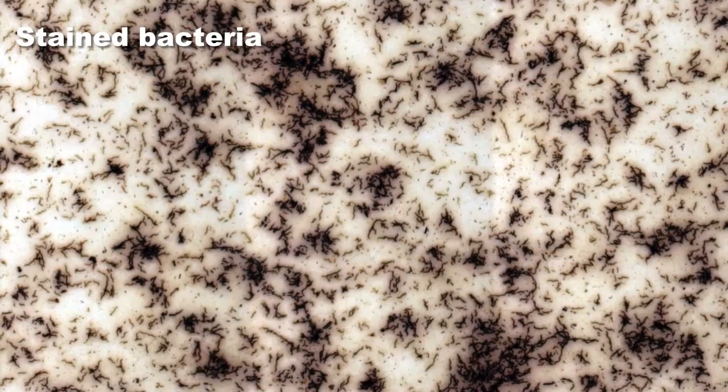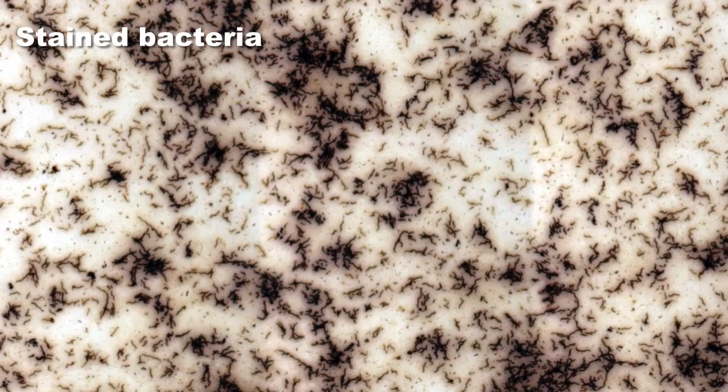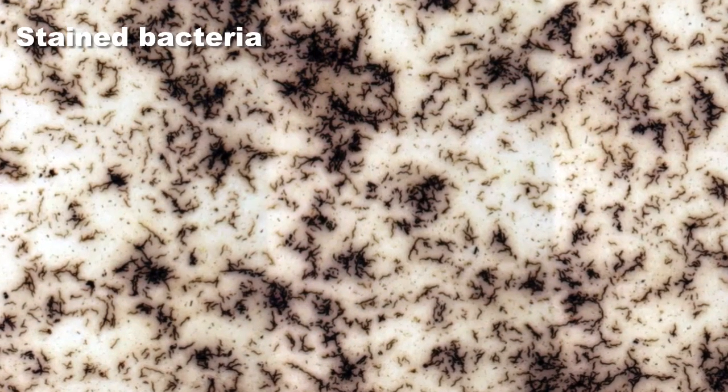So if you want to see bacteria really well, you need a magnification more than 100x. And ideally, you also need to either stain the bacteria. Usually you use methylene blue, or there are also other stains available, or you use so-called optical staining techniques. Now optical staining techniques is an optical way of increasing the contrast.